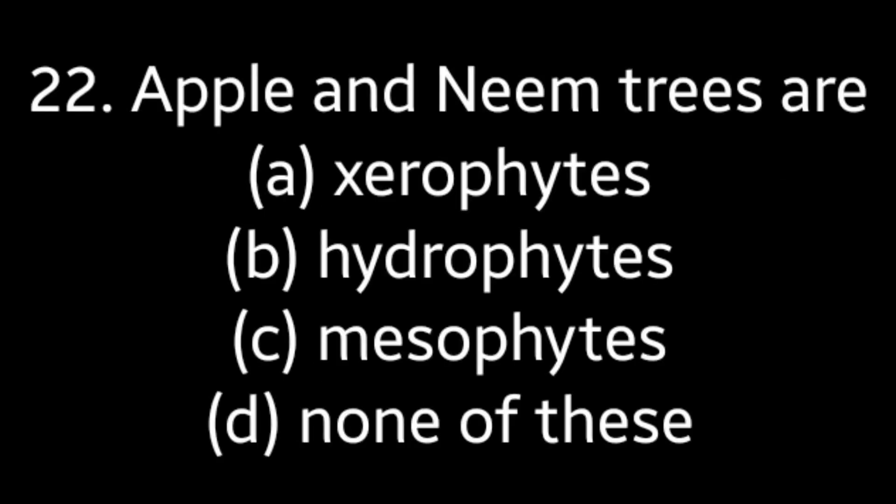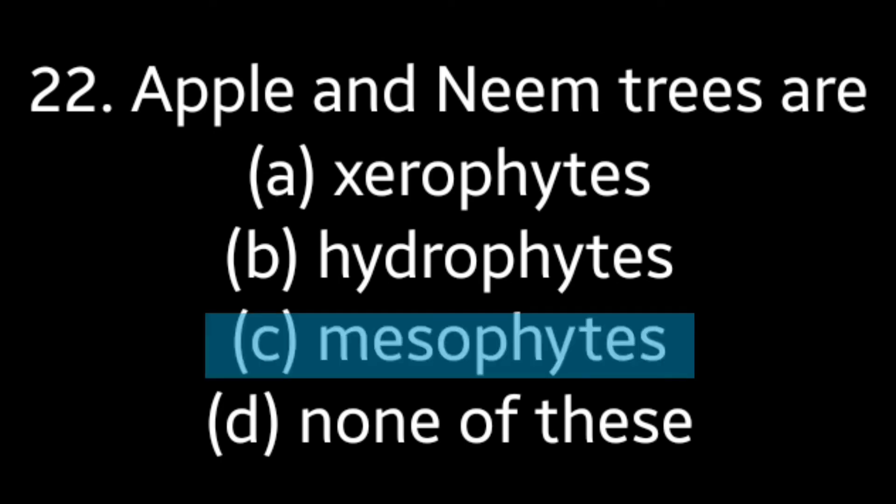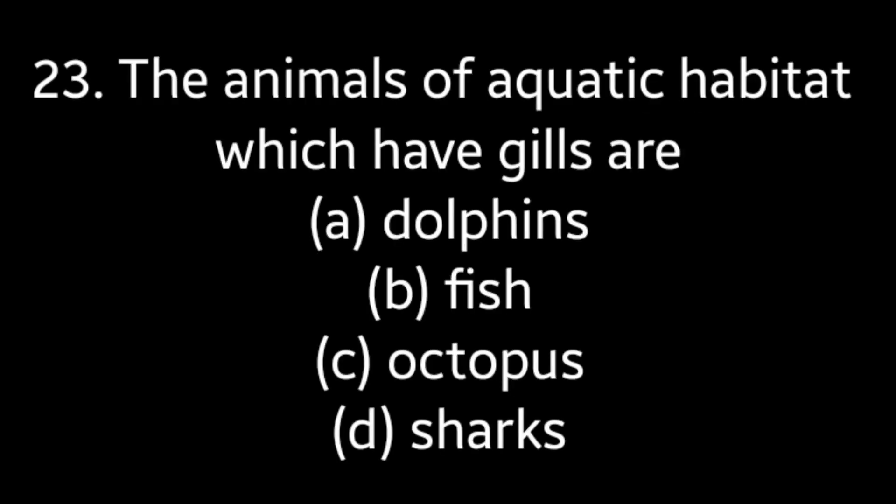Question number 22: Apple and neem trees are — option A: xerophytes, option B: hydrophytes, option C: mesophytes, option D: none of these. Answer is option C: mesophytes.